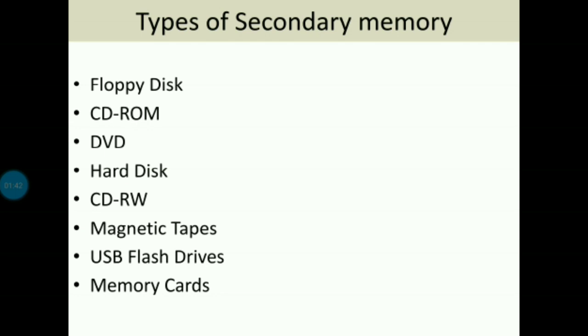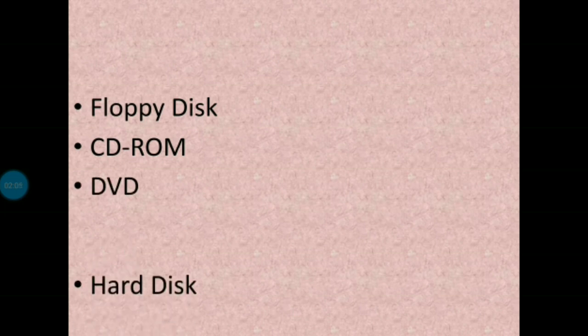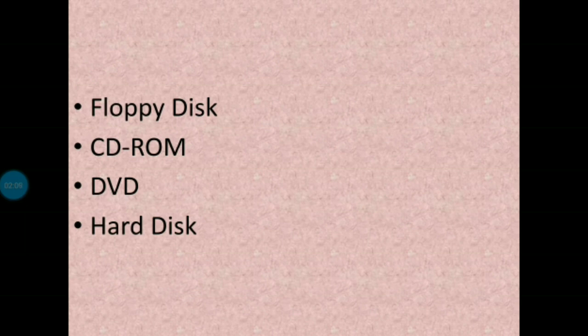Types of secondary memory are as follows: floppy disk, CD-ROM, DVD, hard disk, CD-RW, magnetic tapes, USB flash drives, and memory cards. Today I am going to explain about floppy disk, CD-ROM, DVD, and hard disk. The remaining concepts we will discuss in the next video.